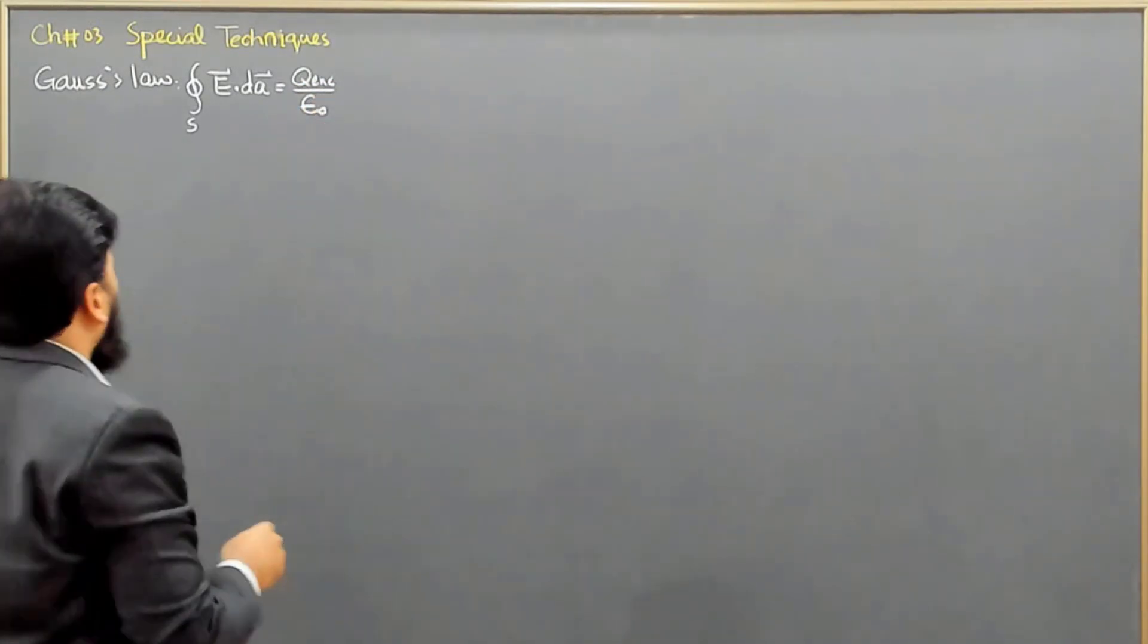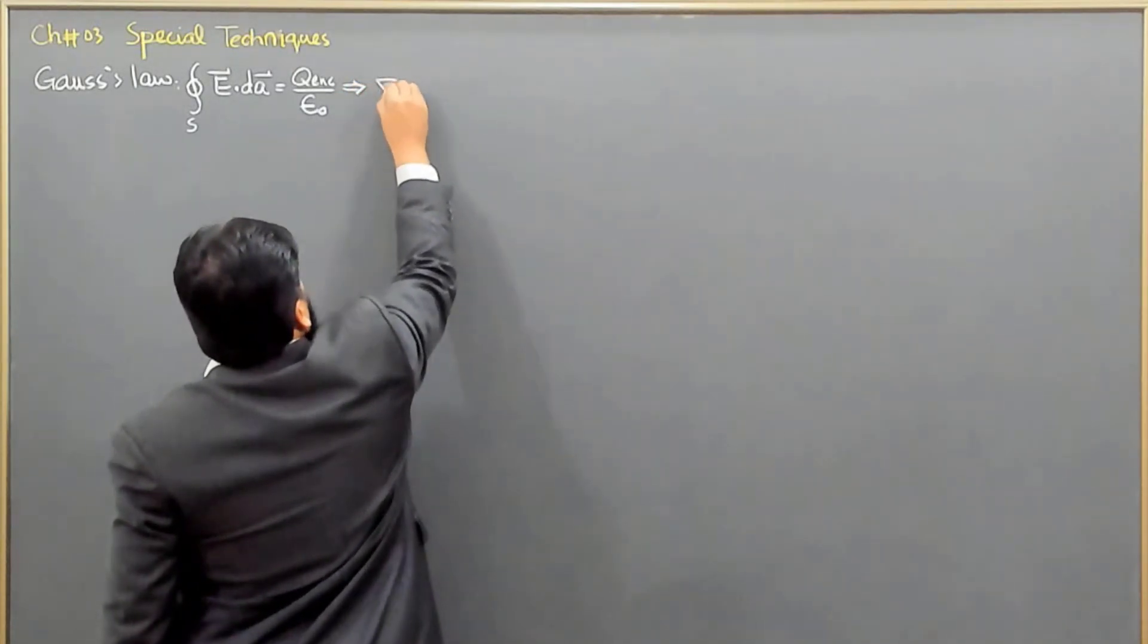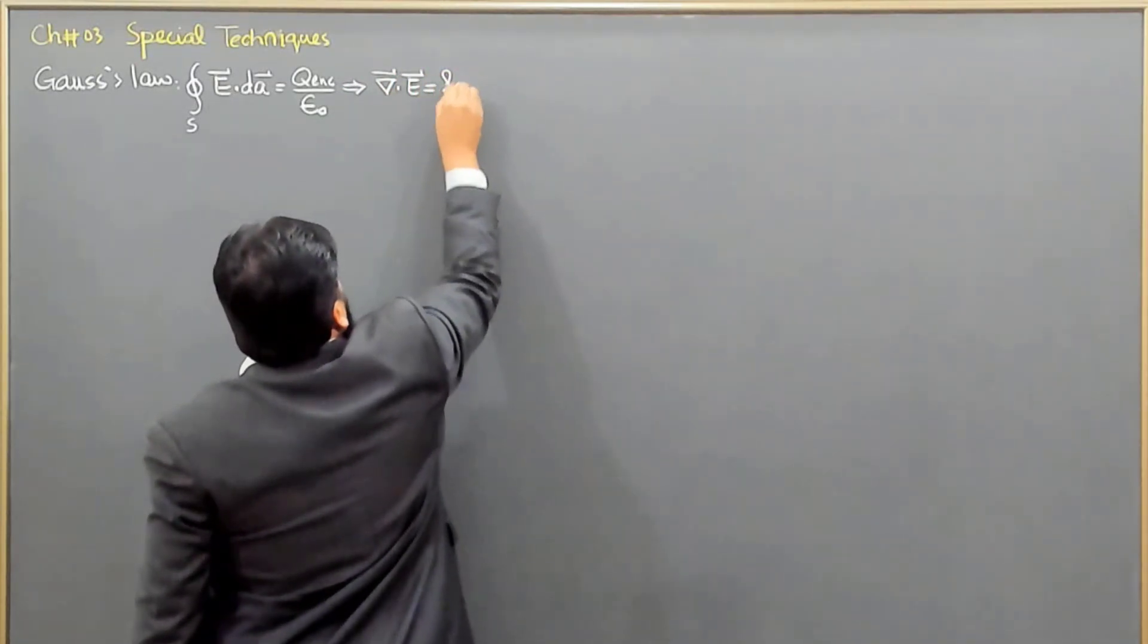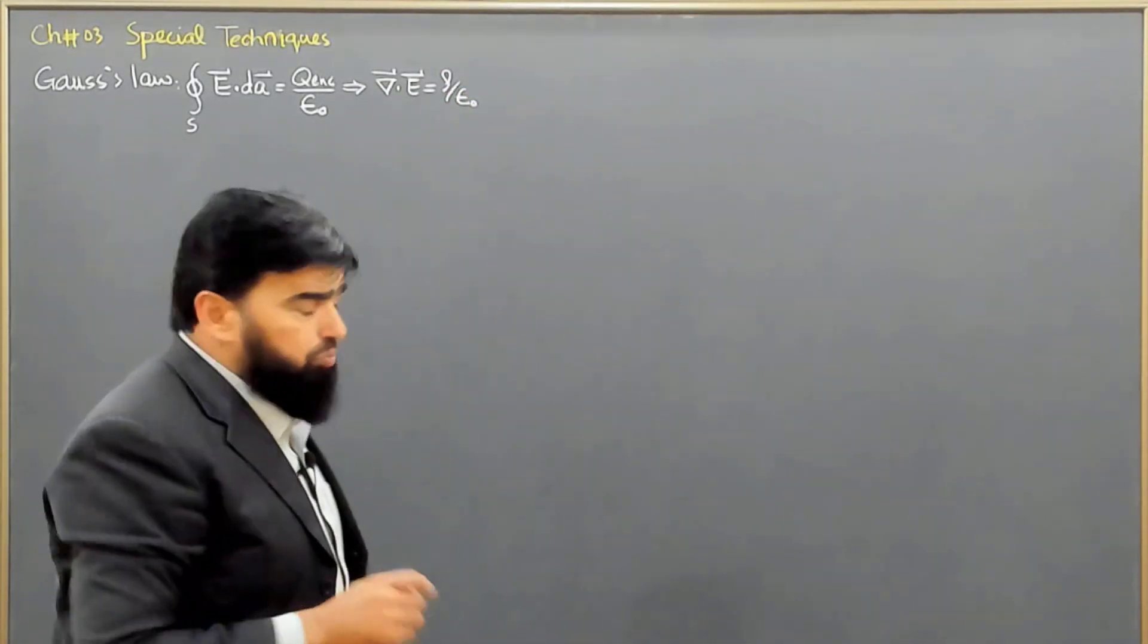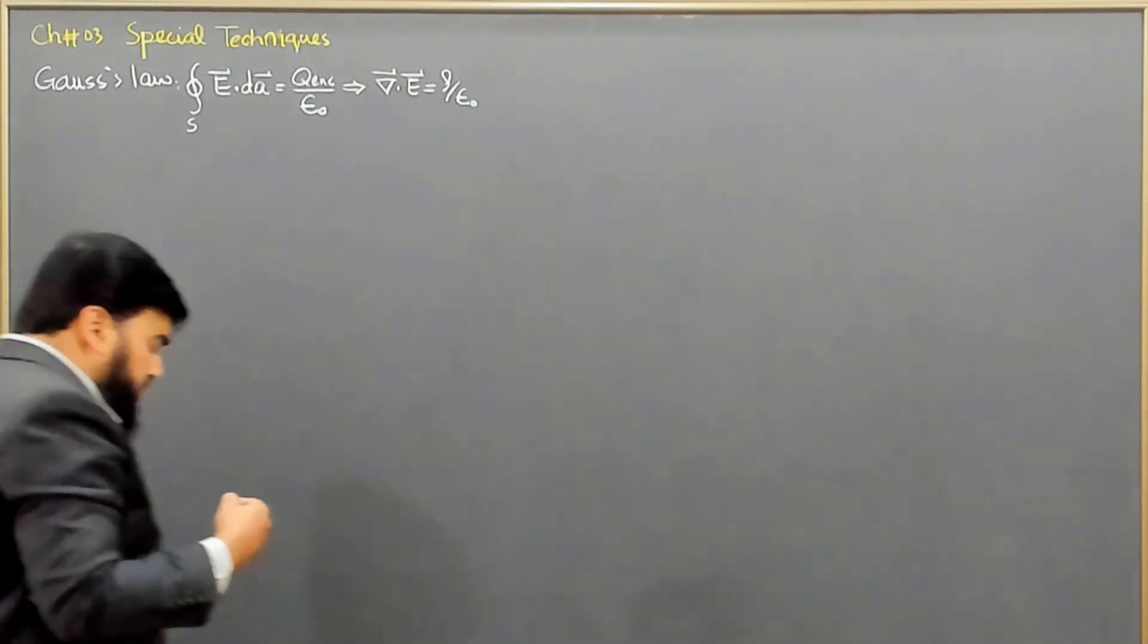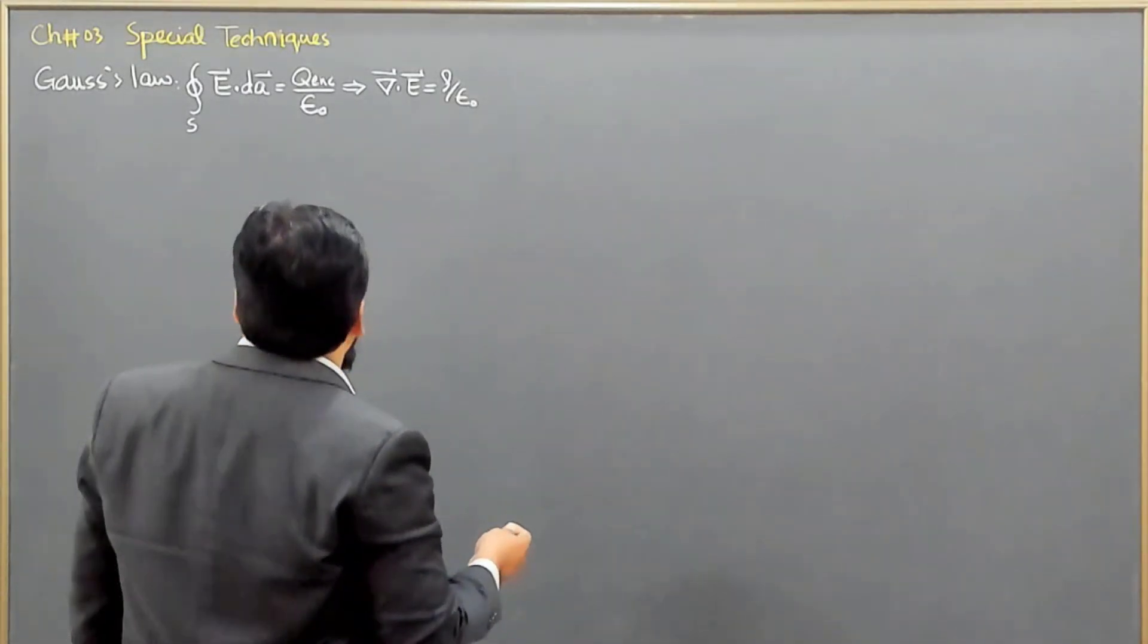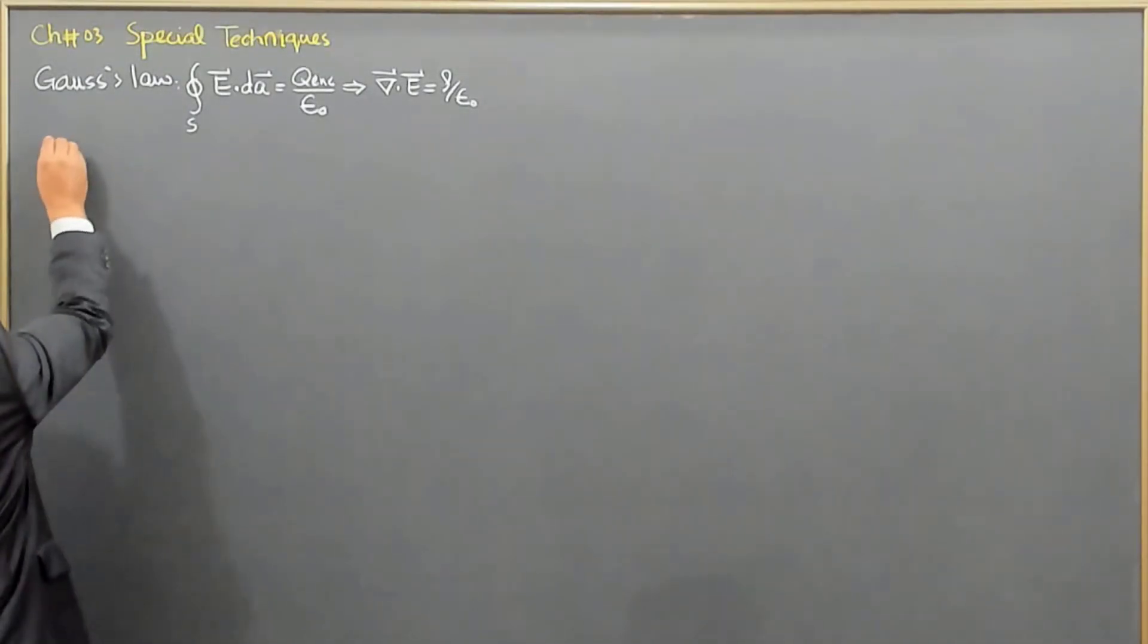and this is equal to Q enclosed over epsilon naught. And we have also derived the differential form of this law is divergence of E is equal to rho over epsilon naught, where rho is the volume charge density. So, in this equation,